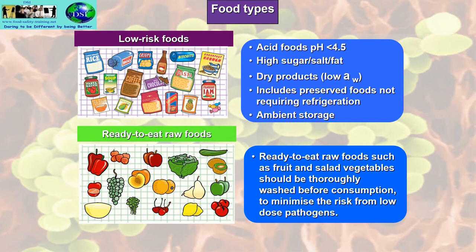Ready-to-eat raw foods such as fruit and salad vegetables shall be thoroughly washed before consumption to minimize the risk from low-dose pathogens. Low-dose pathogens will cause a food-borne disease rather than food poisoning. Food poisoning usually requires a high number of bacteria, whereas food-borne diseases usually require just one to several bacteria.